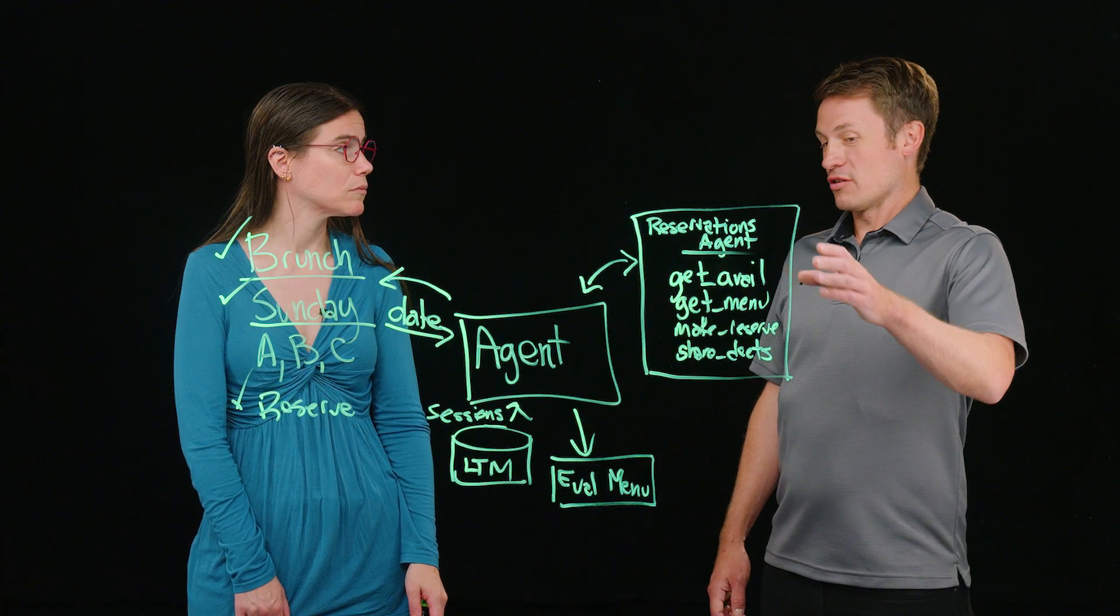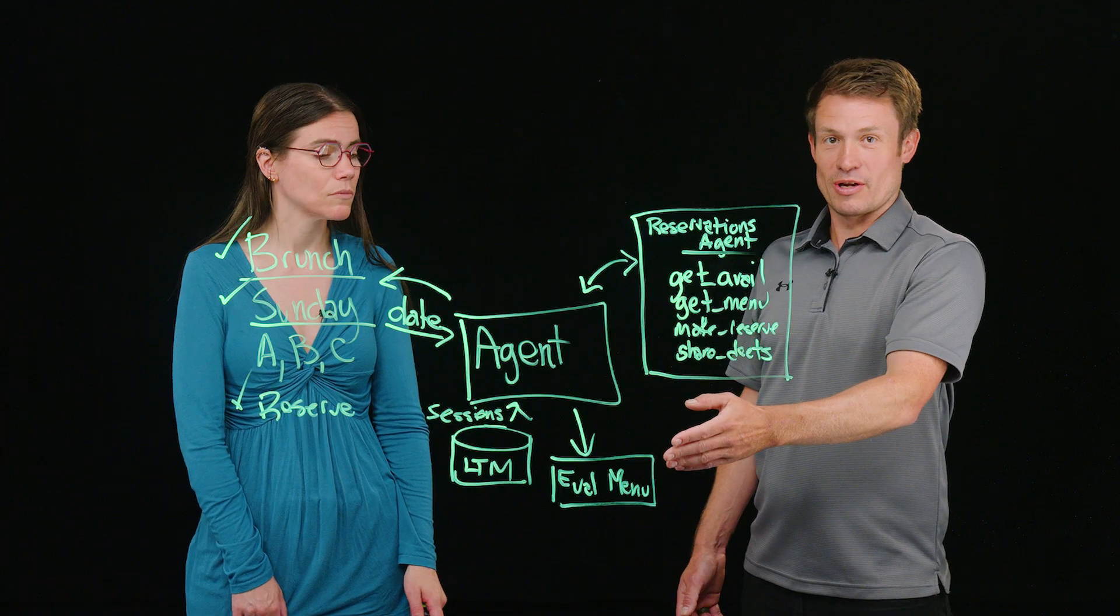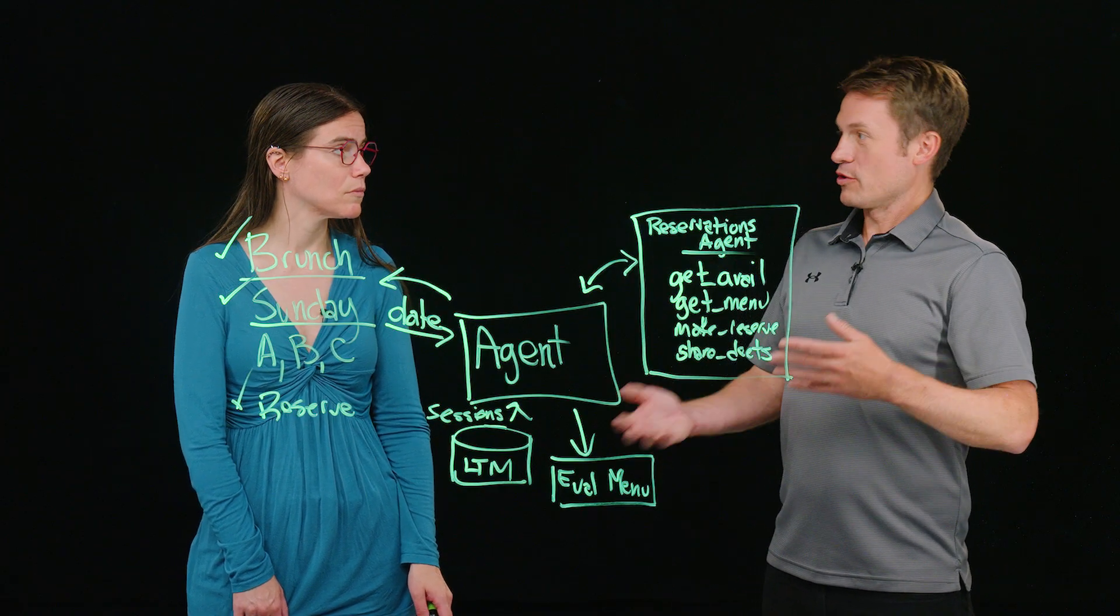So we have an agent that's getting the menu, but we made a tool for this other agent which is evaluating the menu. So why did we split the two apart?